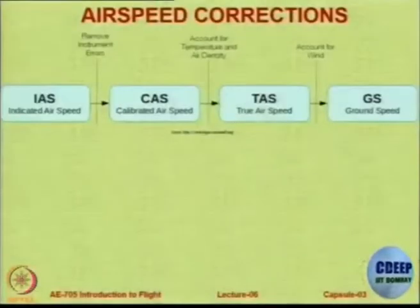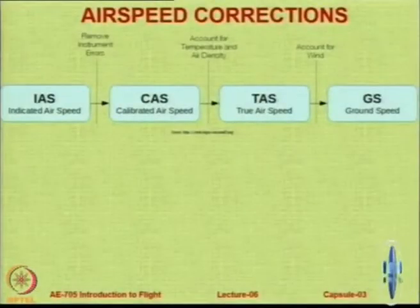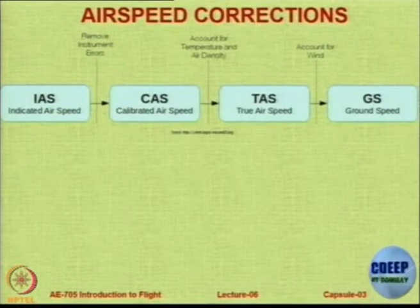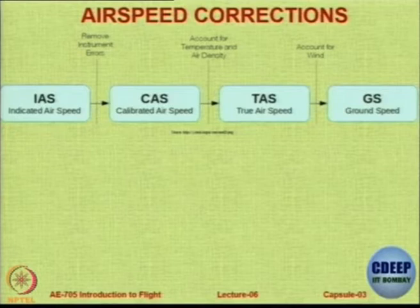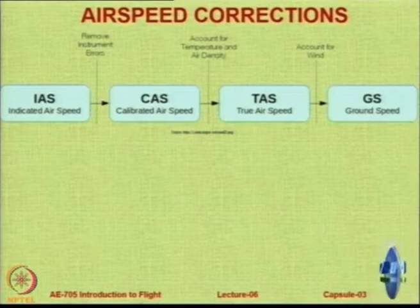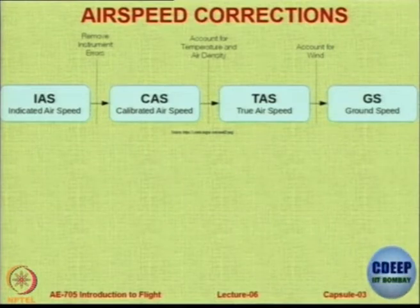Let us see the corrections. There is something called Indicated Air Speed. The Indicated Air Speed is what the pilot sees in the instrument. It could be zero, it could be infinity. Suppose the tube is broken, suppose the needle is jammed — the needle which is supposed to move has a breakage and now the needle has fallen to zero. Whatever speed you fly, it will show zero.